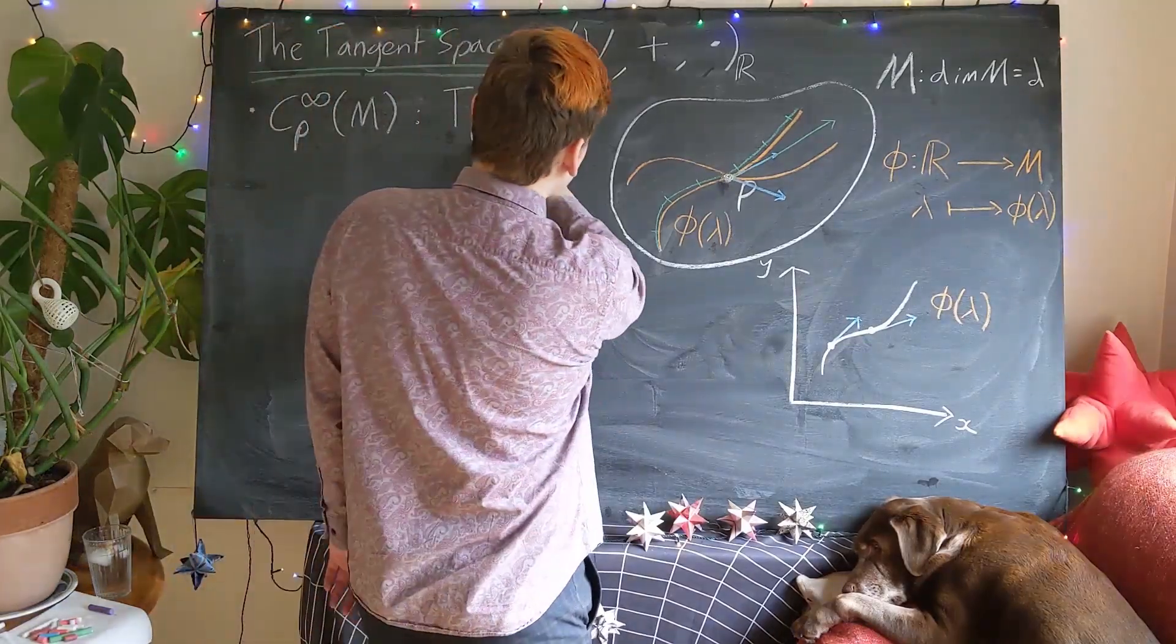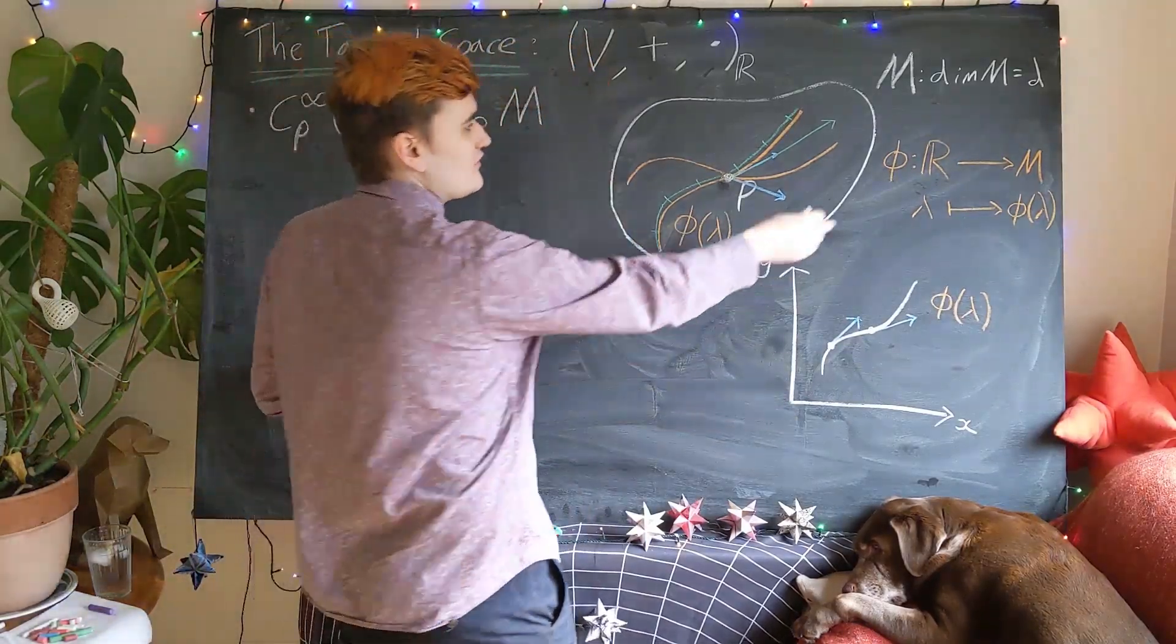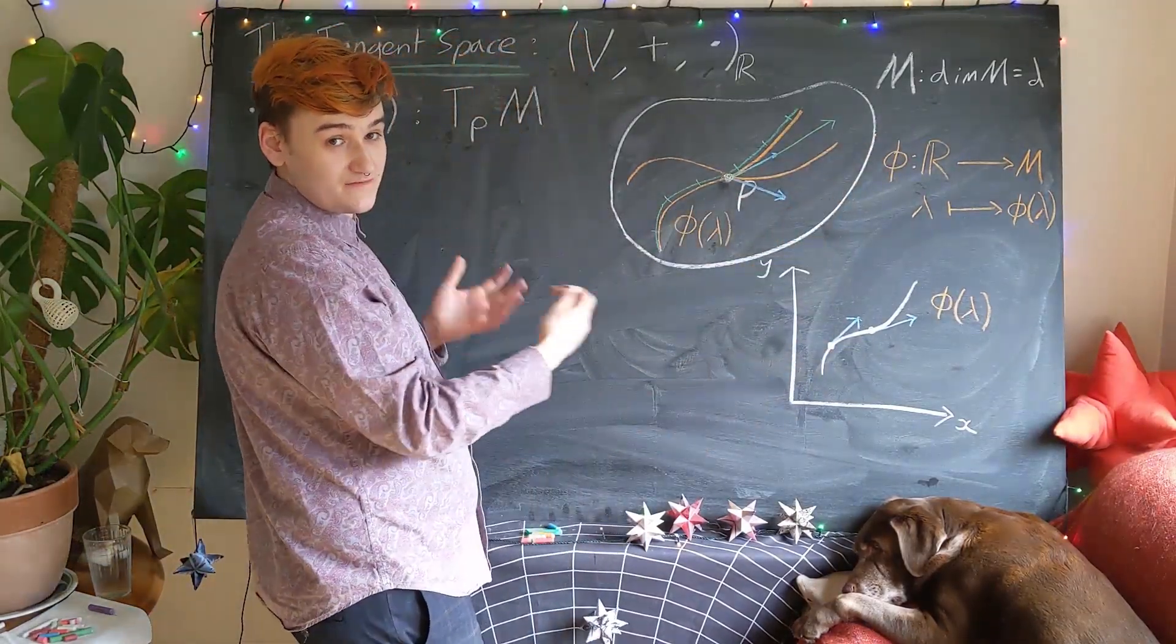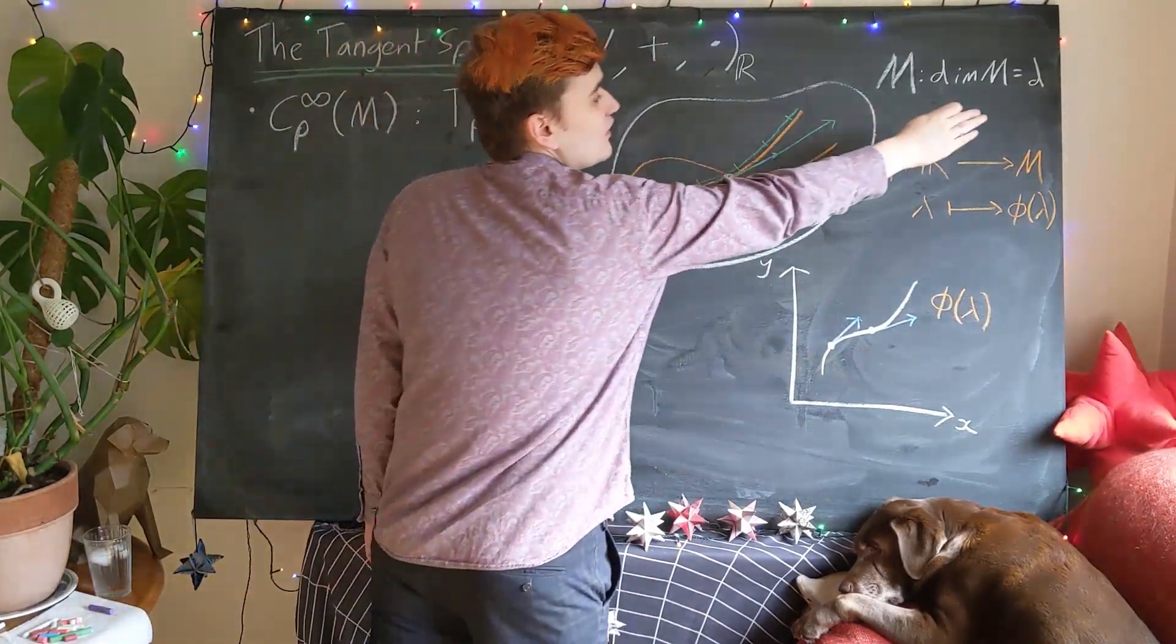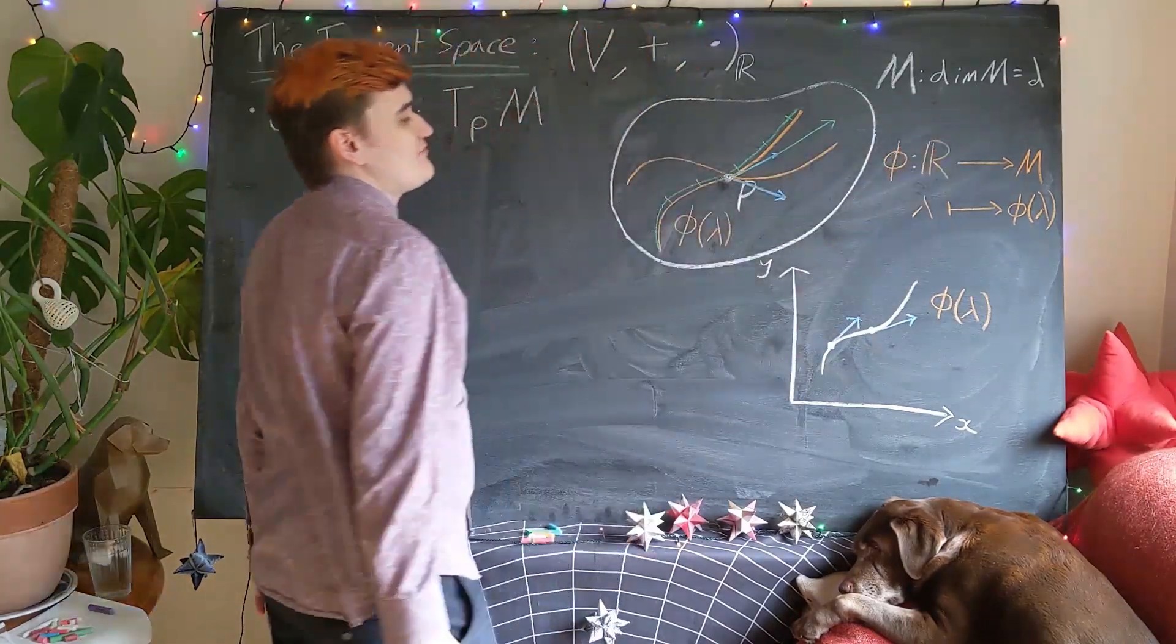And now since the tangent space is going to be of, well this is a theorem that needs to be proved, I'm just going to take it for granted. The tangent space is a vector space of the same dimension as the manifold.